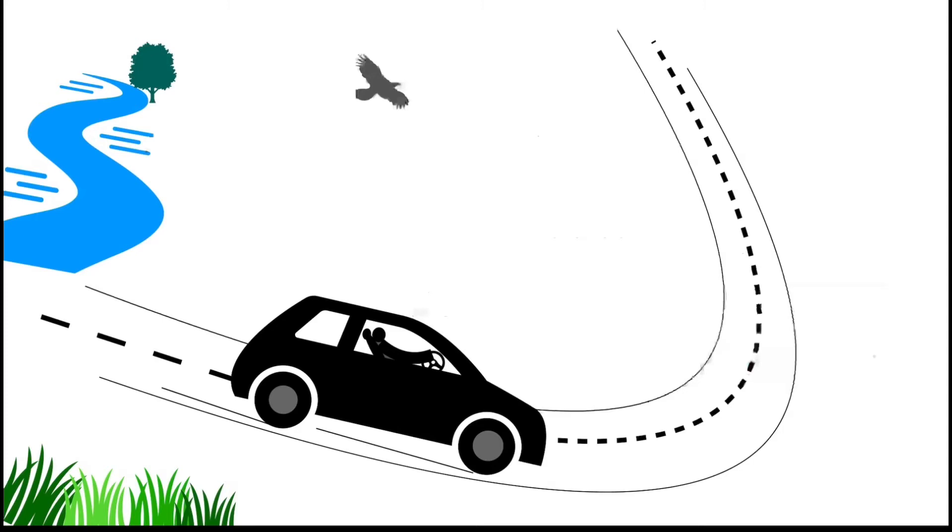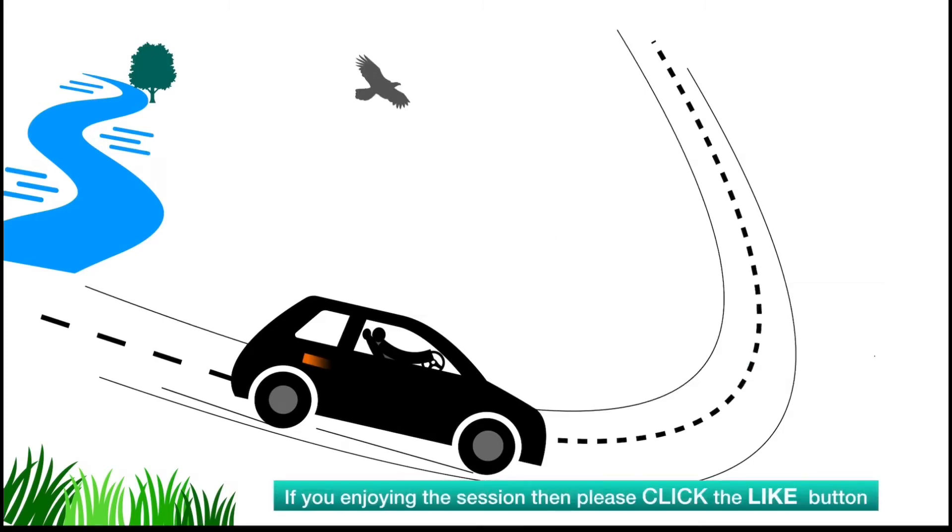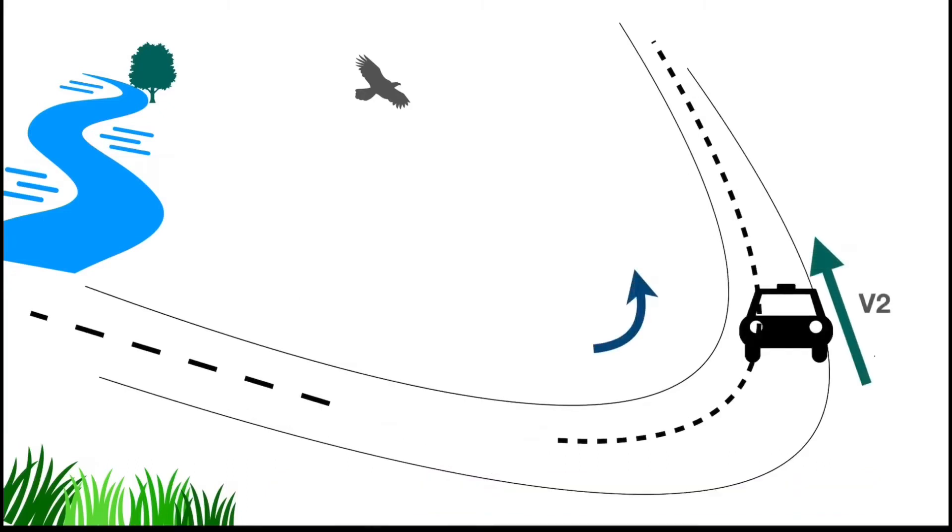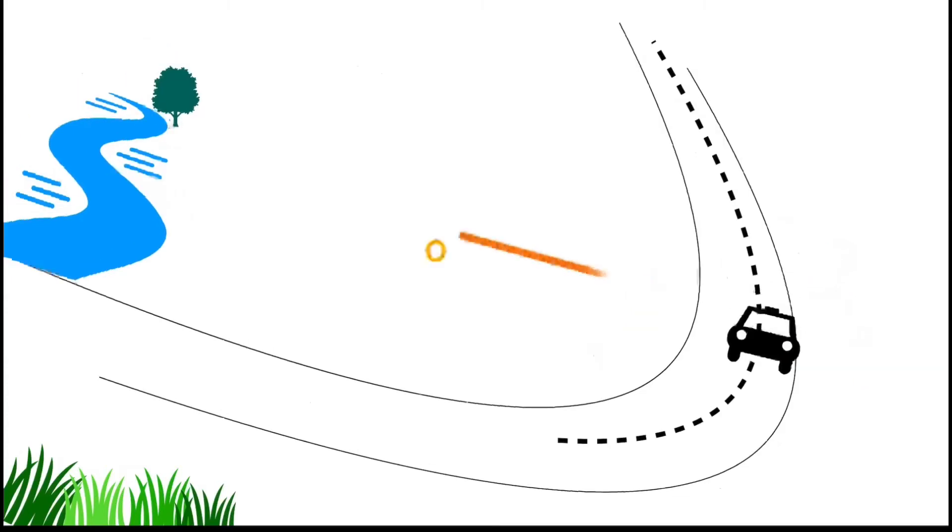So here we will represent the car velocity with vector here, which is an orange vector and velocity is V1. So the orange vector is not only showing the magnitude of velocity, but it also shows the direction. During the time of turning at another location, the car velocity V2 is represented by green vector.